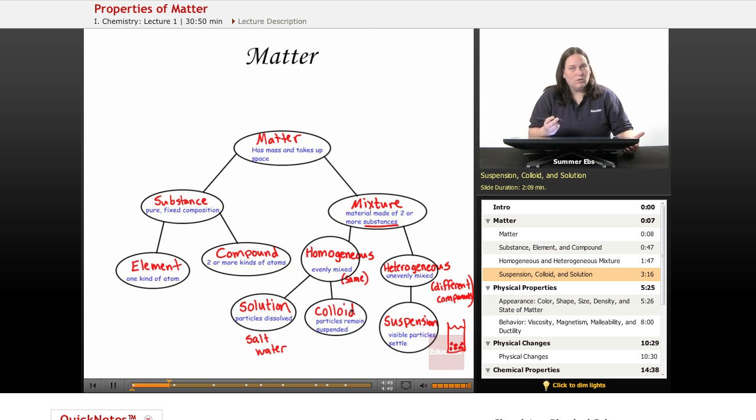An example of a colloid would be paint. So paint all looks the same. You put it on the wall, and it's a nice, even color. But what it really is, is it's a liquid that has solid particles, like paint flecks is kind of what it is. It has solid particles in the liquid. And so when you spread it on the wall, you're spreading this liquid with solid pieces in it. But you can't see them because they're so small. It all looks the same, so it's a homogeneous mixture. But since the particles are still in there, it's a colloid. If the particles dissolve, it's a solution.